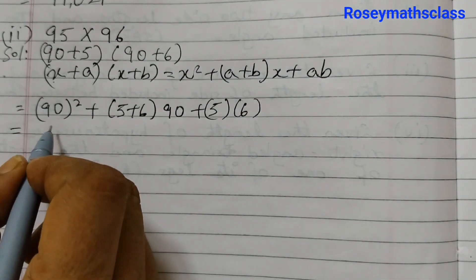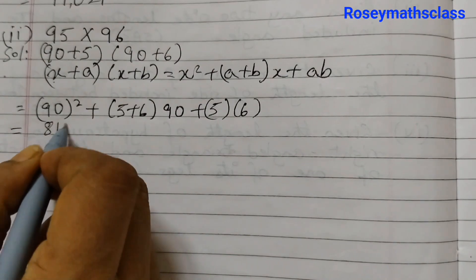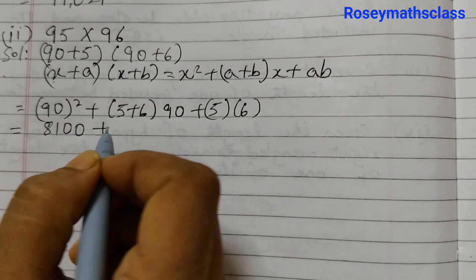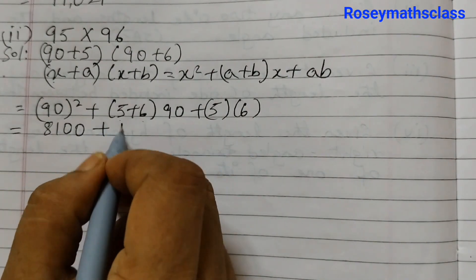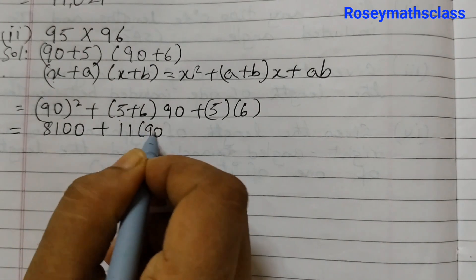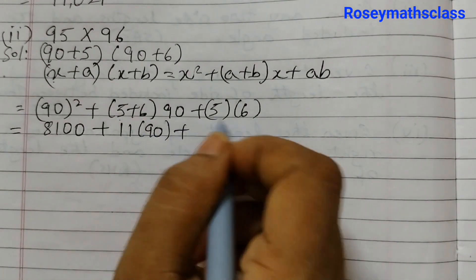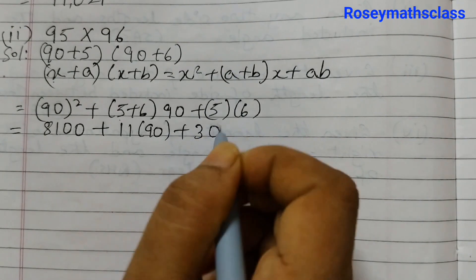9×9 is 81 and then 2 zeros, plus 5 plus 6 is 11, 11 into 90, plus 5×6 is 30.